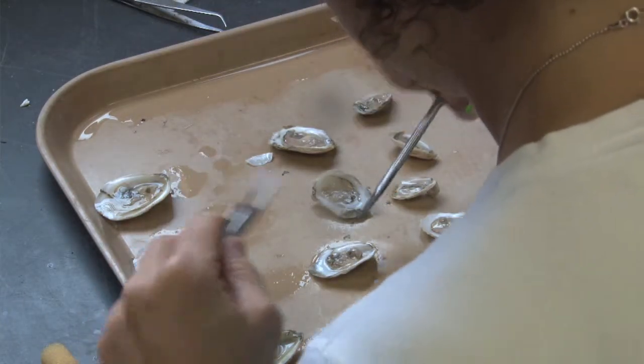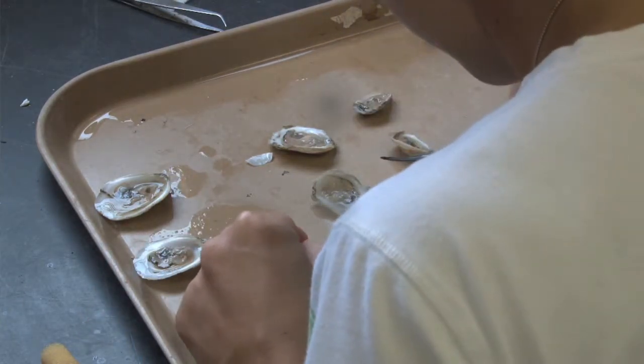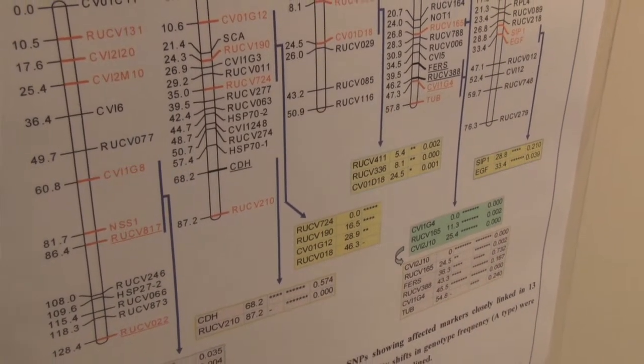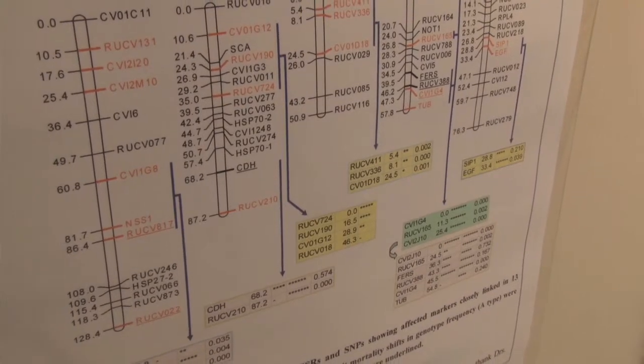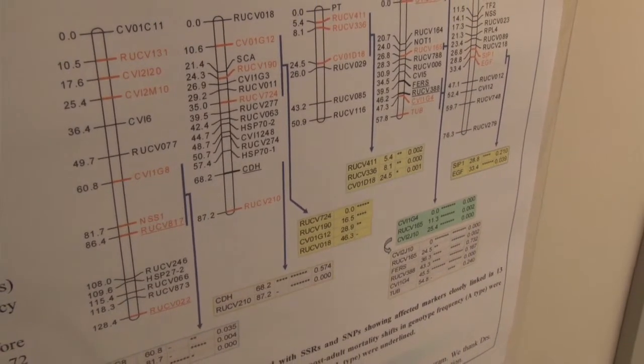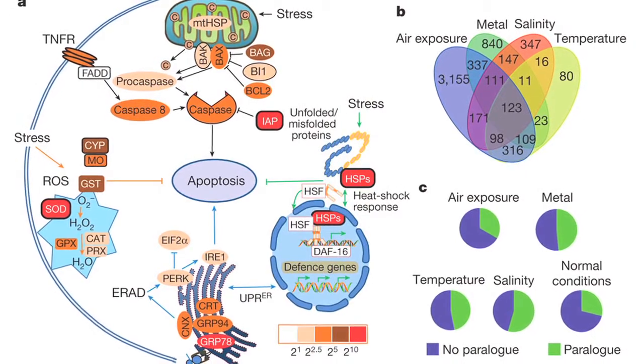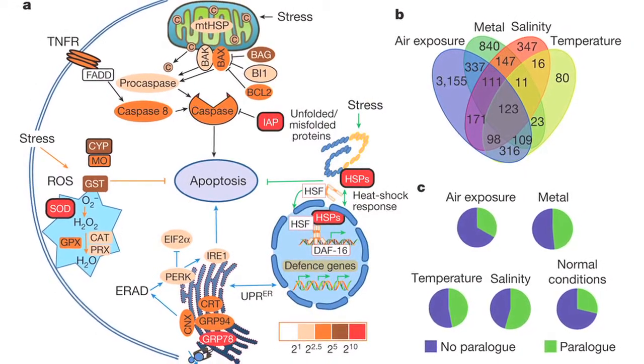First, we need to see what genes are in the oyster genome. We have sequenced the oyster genome. We have cataloged all the genes in the oyster. There are about 28,000 genes. And we're trying to see if oysters are infected, which genes are turned on and which genes are turned off.